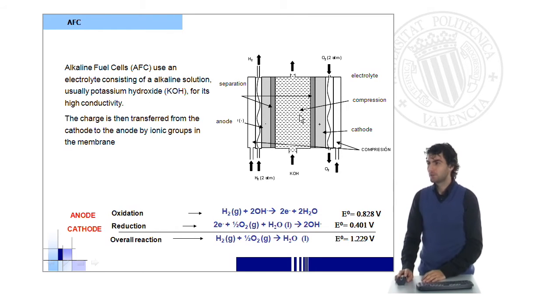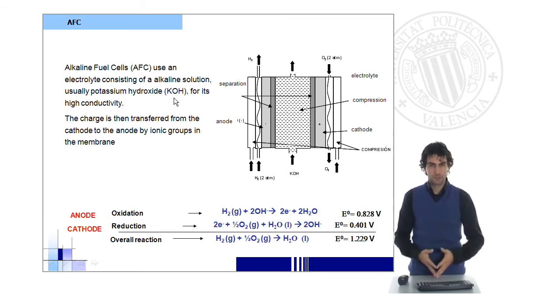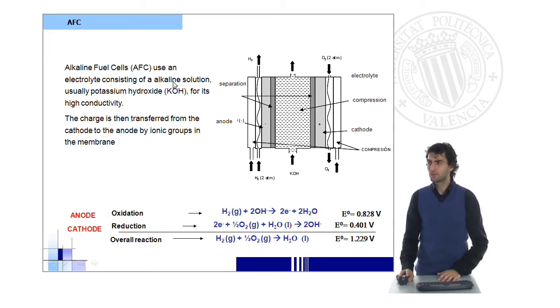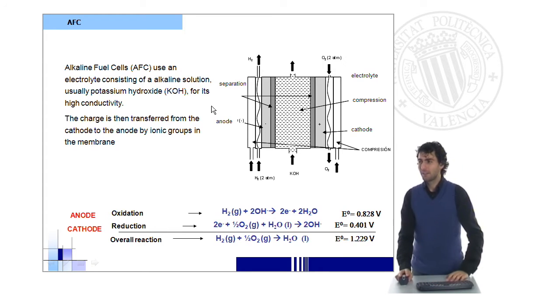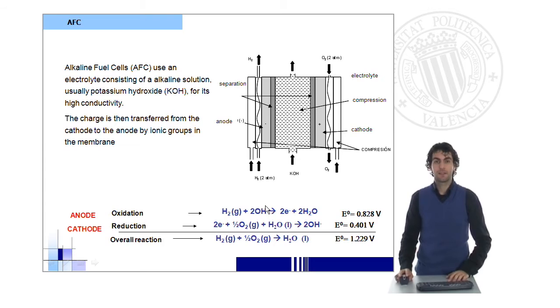Alkaline fuel cells use an electrolyte consisting of a potassium hydroxide solution, which is highly concentrated, usually 100% concentrated. They can also use other alkaline solutions and materials, but the most common is potassium hydroxide. In this case, the charge is transferred from the cathode to the anode as a negative charge, the hydroxyl anion.